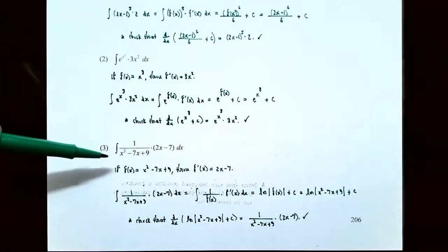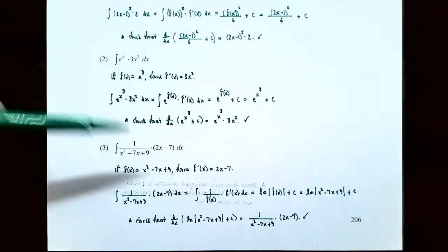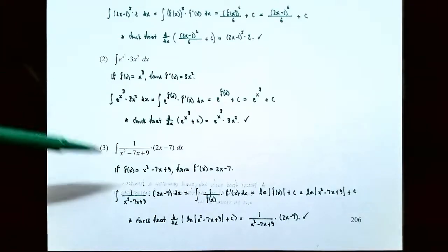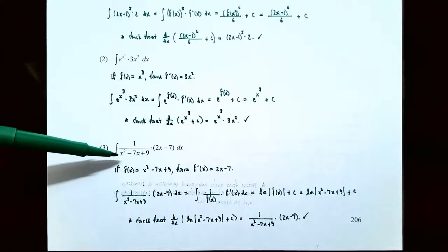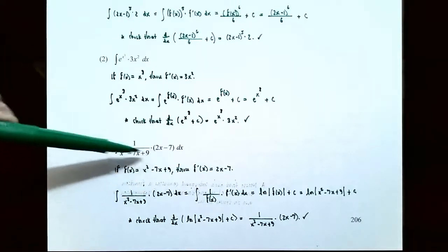And number three: find the indefinite integral of 1 divided by x squared minus 7x plus 9, all in the denominator, times 2x minus 7 dx. It's not just 1 divided by x — it's 1 divided by a function. So it looks like the function this time is f of x equals x squared minus 7x plus 9, the denominator.